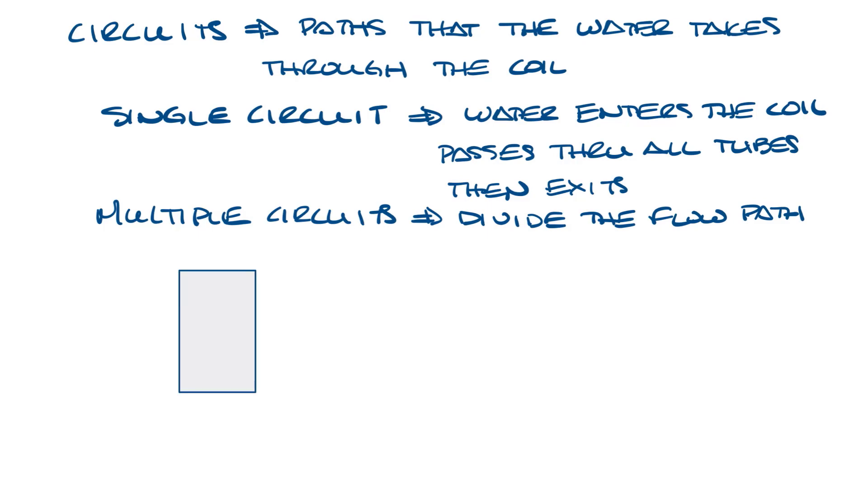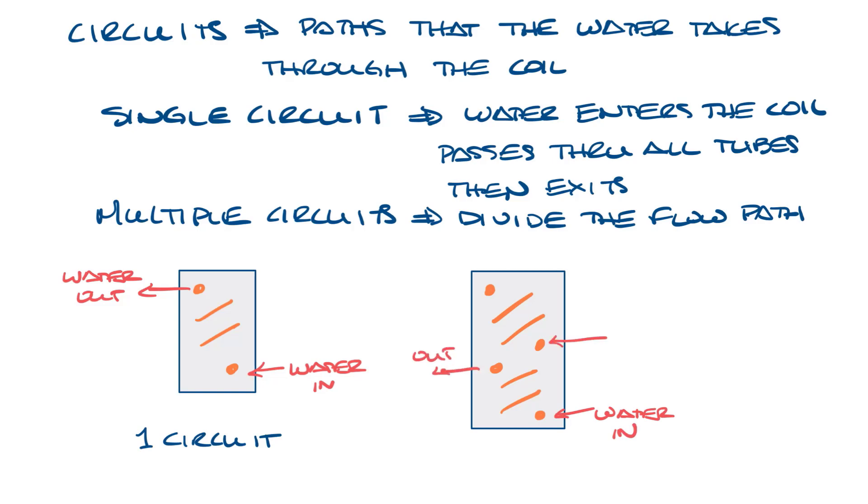Let's bring back our two row water coil. There's only one place for the water to go in and one place for the water to go out, so this is a single circuit coil. If it looked like this, then there'd be two circuits, because the water would come in here and out here, and in here and out here. Both of these are two row water coils.